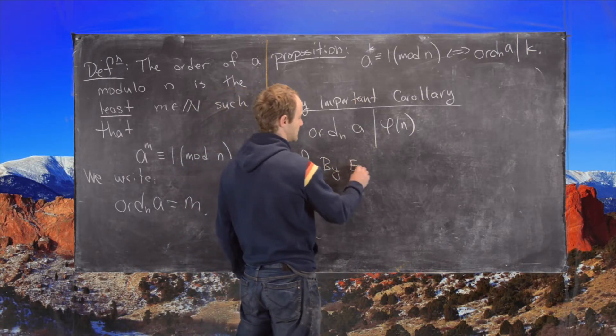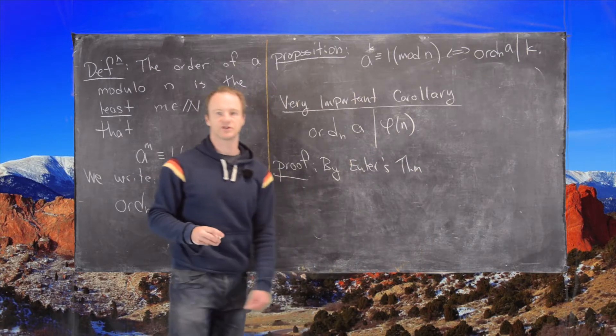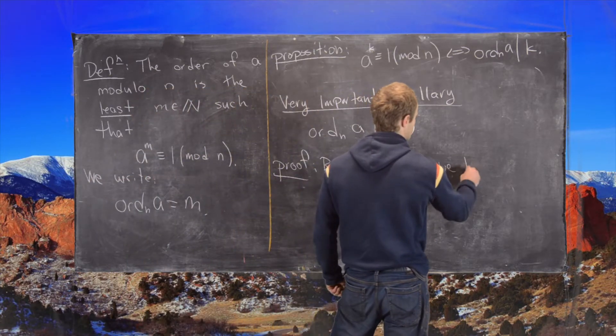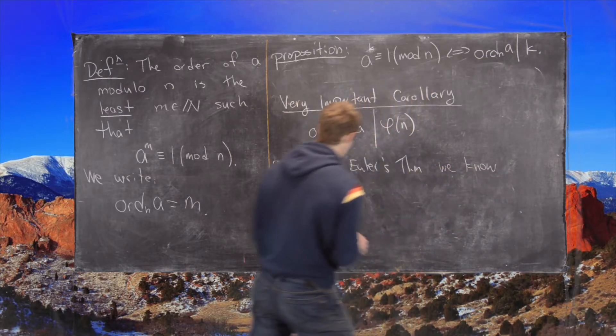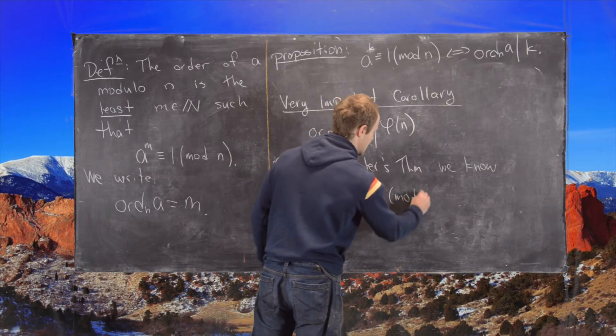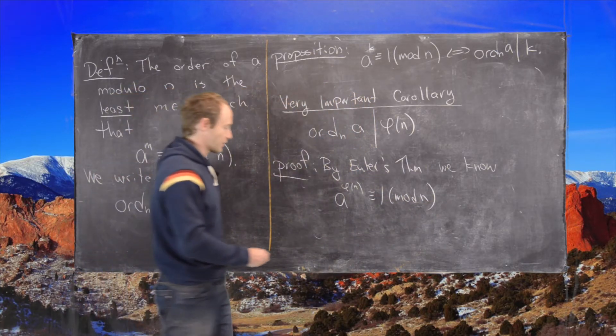So by Euler's theorem, or sometimes called Euler's generalization of Fermat's little theorem, we know a to the phi of n is congruent to 1 mod n. But now applying the proposition...